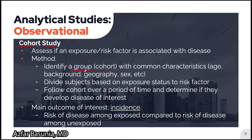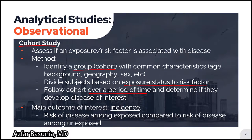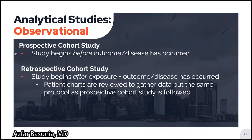In a cohort study, the goal is to assess if an exposure or risk factor is associated with disease. A group known as the cohort is first identified with common characteristics such as age, background, geography, and sex. The subjects of the cohort are then divided based on their exposure status to the risk factor. The cohort is then followed over time to determine if they develop the disease of interest. The main outcome of interest in a cohort study is incidence — the risk of developing the disease among the exposed compared to the unexposed.